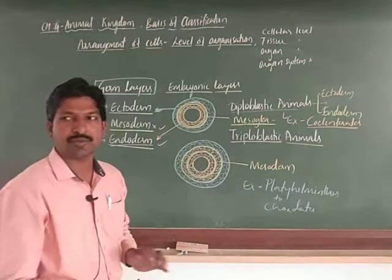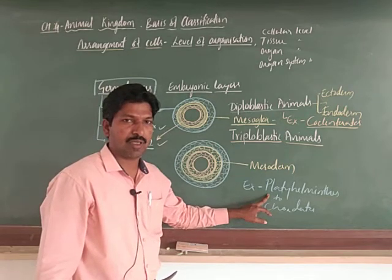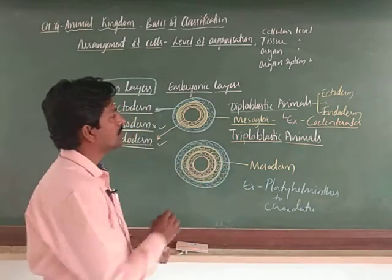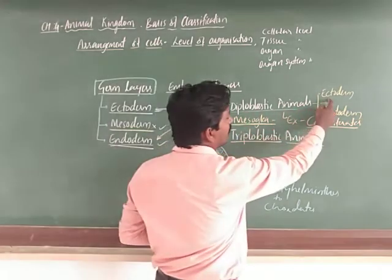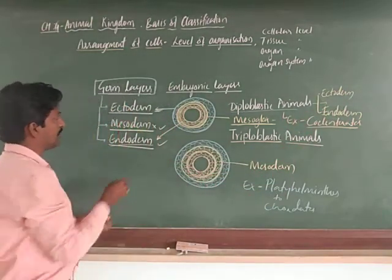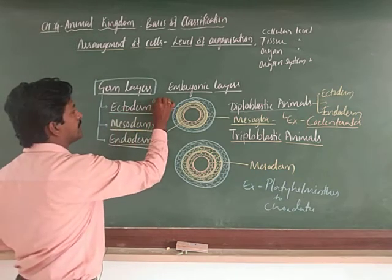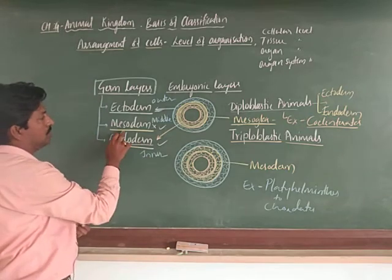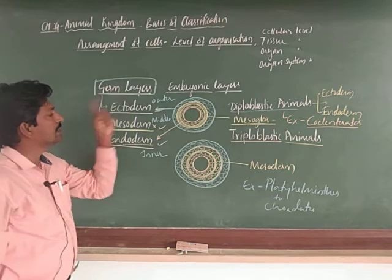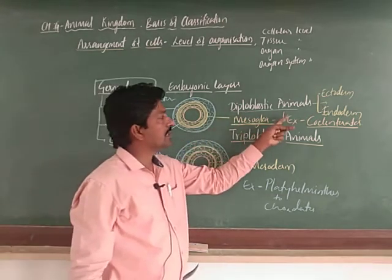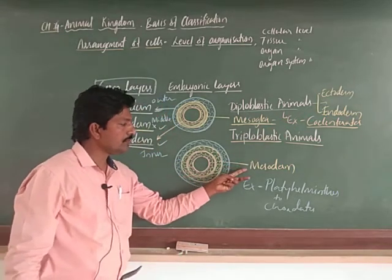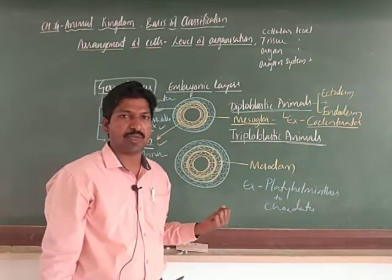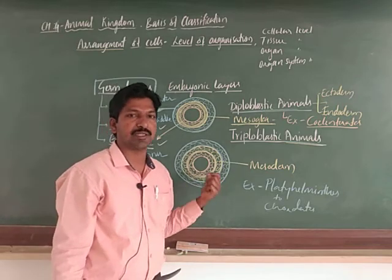We are also triploblastic since chordates are triploblastic. You can remember: ecto means outer, endo means inner, so outer is ectoderm, middle is mesoderm, and inner is endoderm. You should remember all three germ layers. If only two germ layers are present, we call it diploblastic; if three germ layers are present, we call it triploblastic. On the basis of germ layers, animals are classified into these two groups.